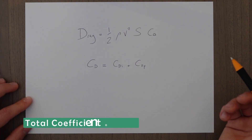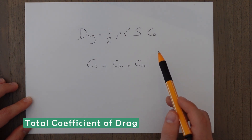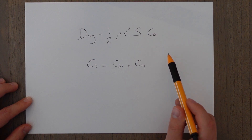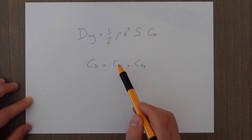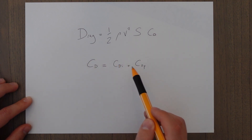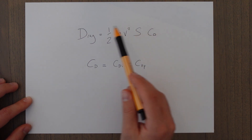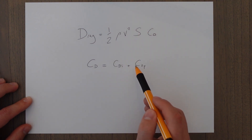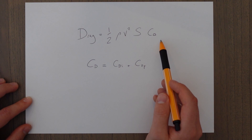Earlier we broke down the drag equation into two parts: one for parasitic drag and the other for induced. As the coefficient of drag is just induced drag plus parasite drag, we can simply combine them together and use one drag equation.